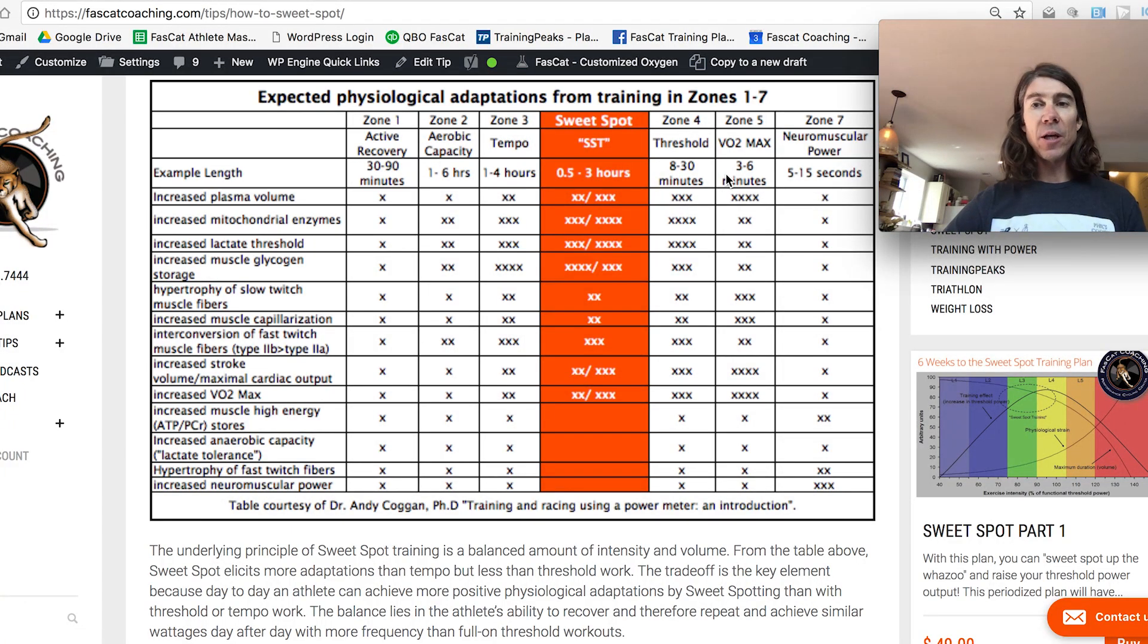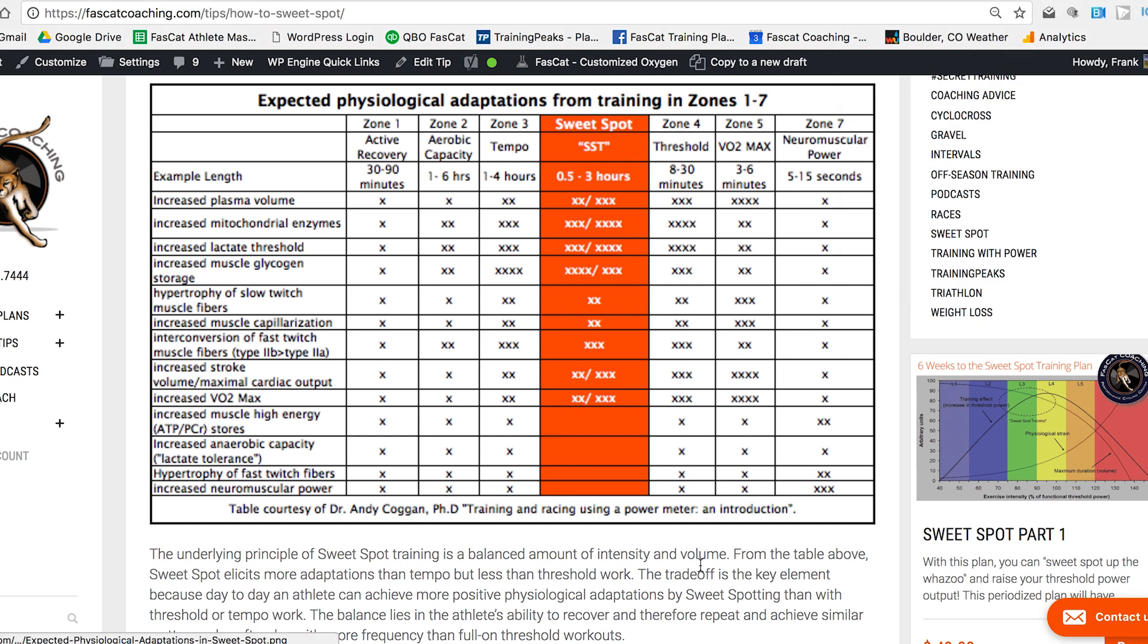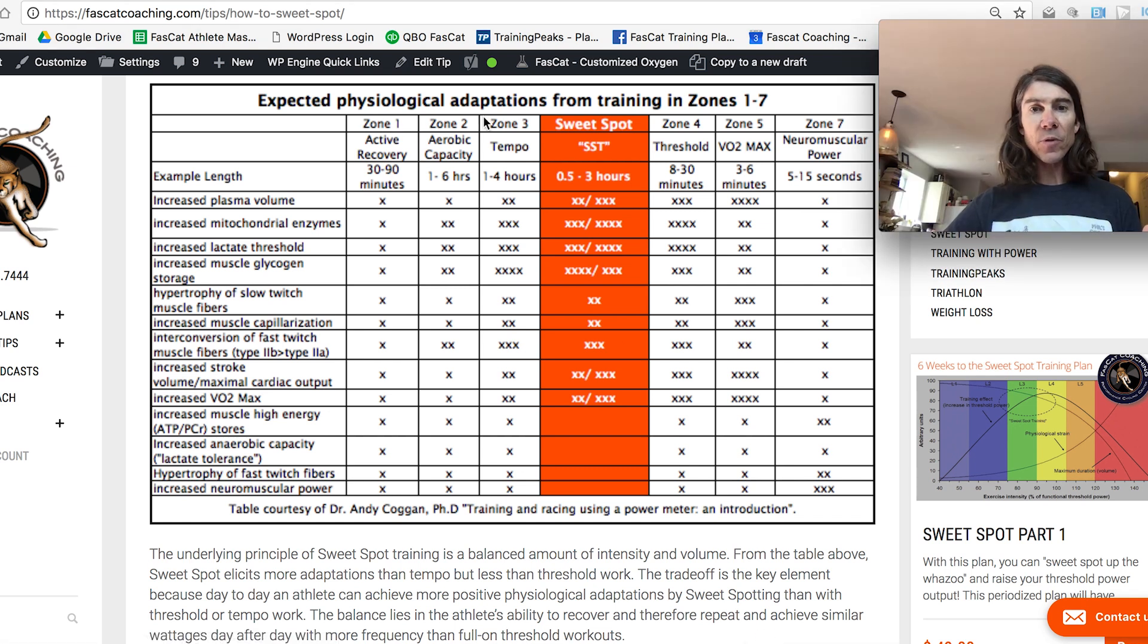This table illustrates the expected physiological adaptations from training in zones one through seven. If you follow my cursor here, zone one here, zone two, tempo, sweet spot, threshold, VO2, and neuromuscular power.